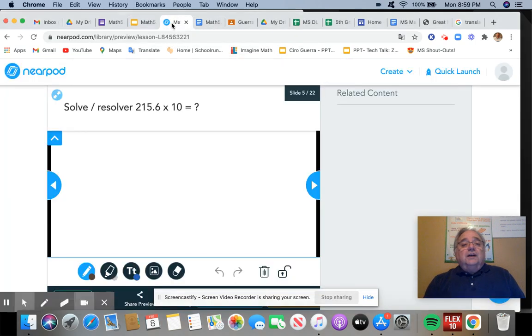Let's go to Nearpod here. And the first one here, we have 215 and 6 tenths times 10. We have one zero, so that's one digit that we're going to be moving over. So the decimal is right here. Since I'm multiplying, I'm adding a digit, so I'm going to move the decimal over to the very end, which gives me the answer 2,156.